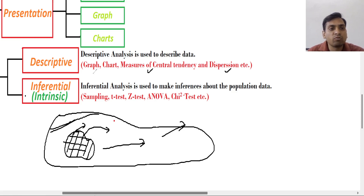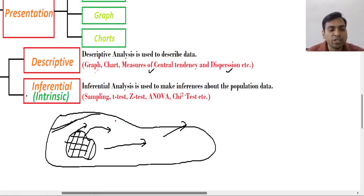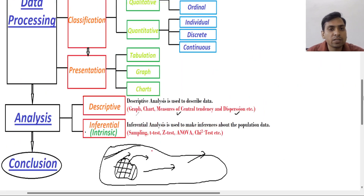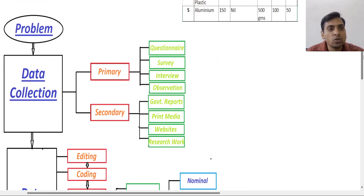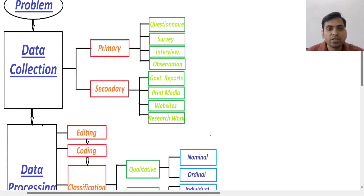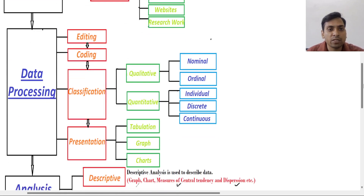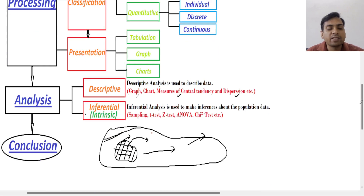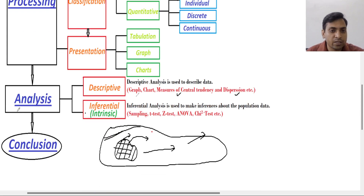So there are two types of statistics: first is descriptive, second is inferential, and this comes under the analysis part. I have explained all the points of the statistical process in my previous lectures — first was data collection, primary and secondary; then data processing: editing, coding, classification; then presentation; and then analysis. If analysis is completed, then you can conclude the result.